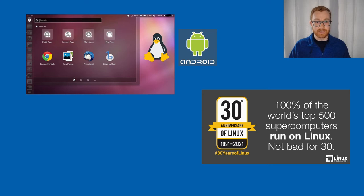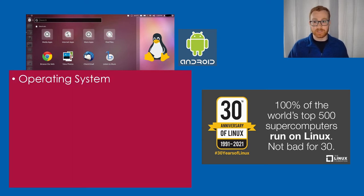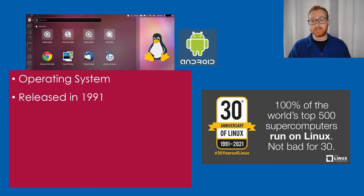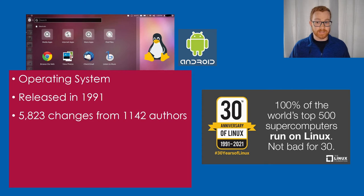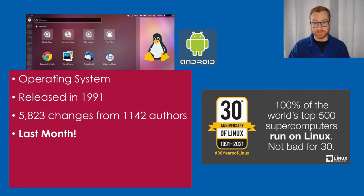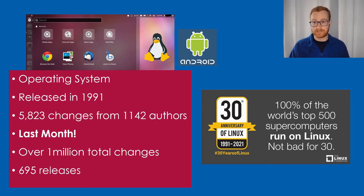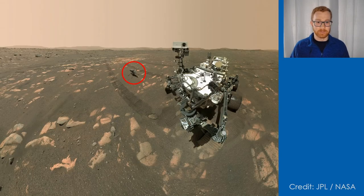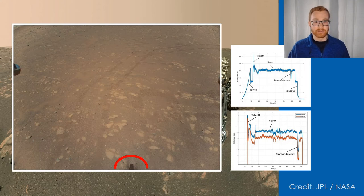By way of comparison, this is Linux, which is arguably one of the world's most successful software projects. It's an operating system that powers Android phones and 100% of the world's top 500 supercomputers. It was released in 1991 and has had almost 6,000 changes from over a thousand authors just last month. There have been over a million changes in total and almost 700 full releases. And a relatively unmodified version of Linux just landed on Mars on this drone helicopter called Ingenuity, flying around and sending measurements back.